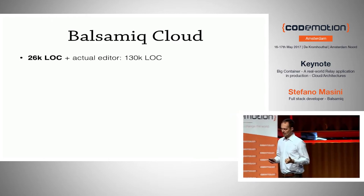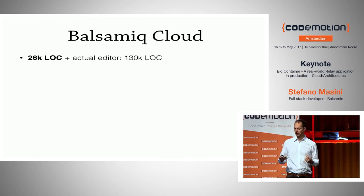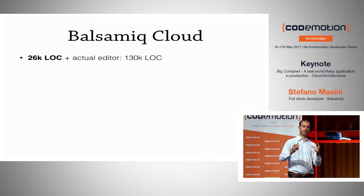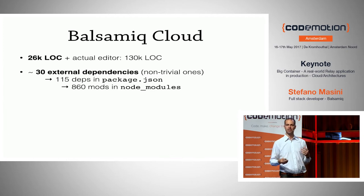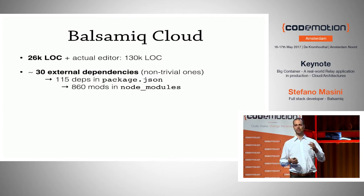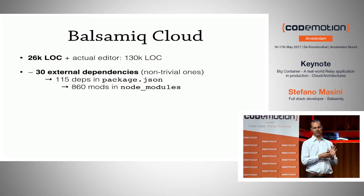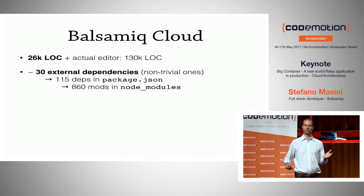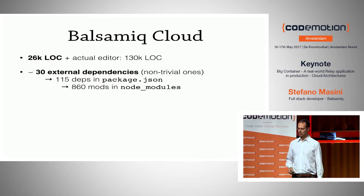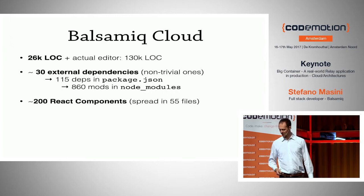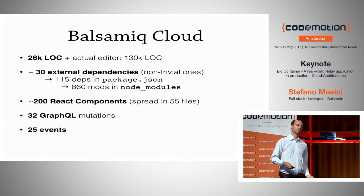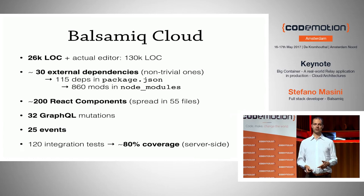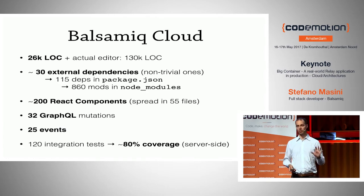Let's give a few numbers. We have 26,000 lines of code for the part I was responsible for, and the actual editor is 130K in comparison. We have 30 external dependencies we really care about, which end up being 115 in package.json because of Webpack and development tooling — and the whole thing explodes to 160 modules in node_modules. We have about 200 React components spread across 50 files, 32 GraphQL mutations, 25 different server notification types, and about 80% coverage in server-side code with integration tests.